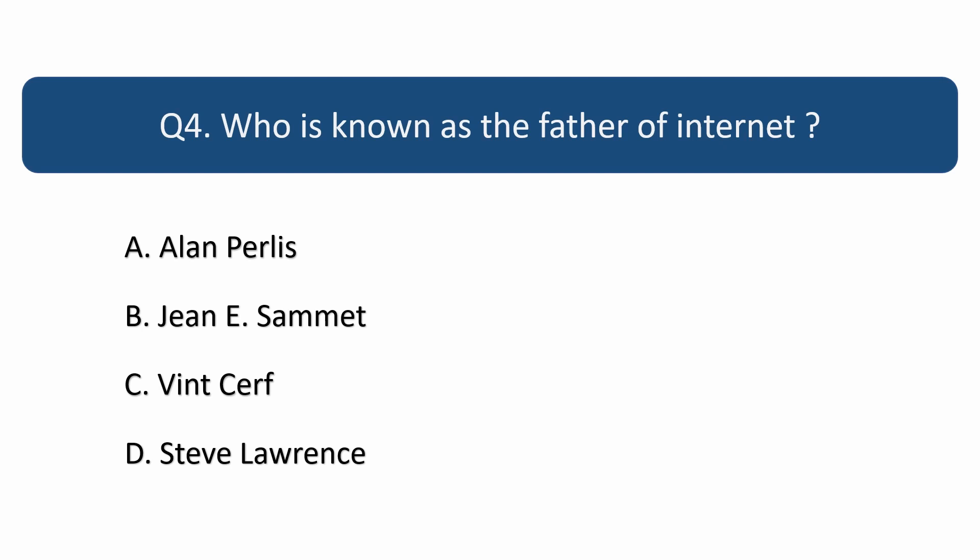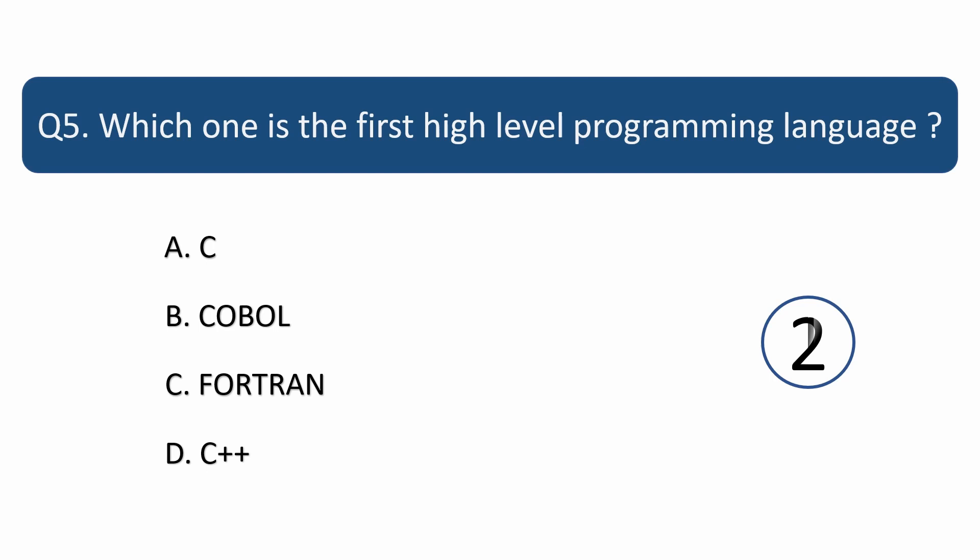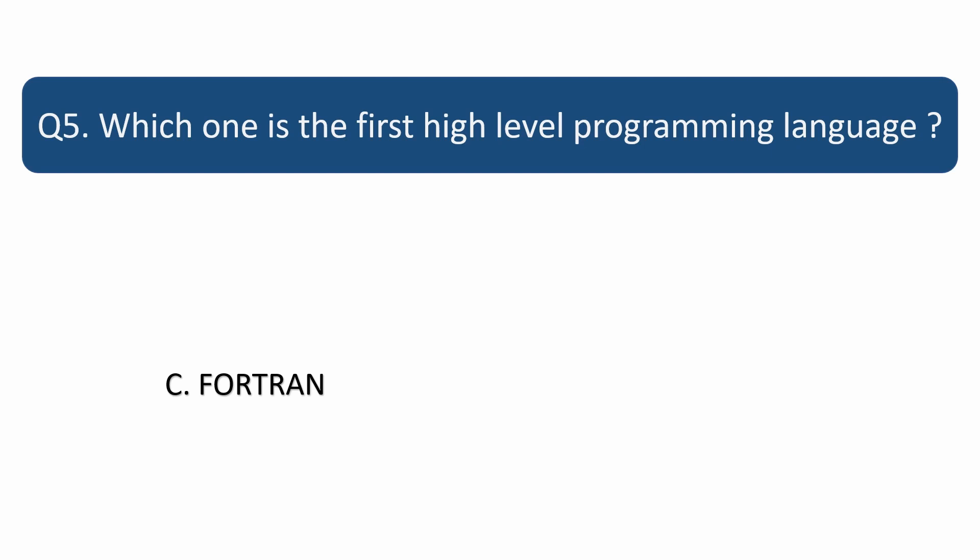Question number 5. Which one is the first high-level programming language? Answer is C. Fortran.